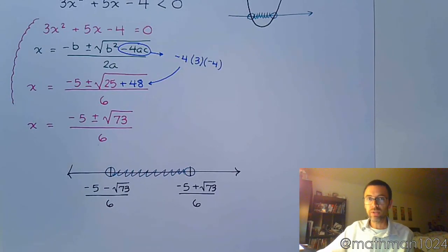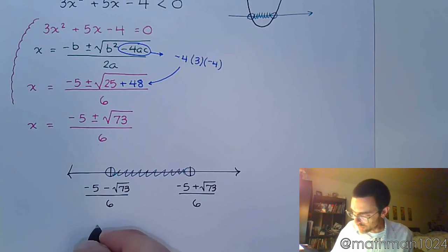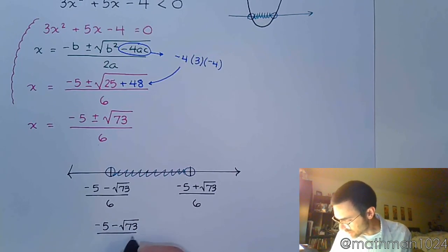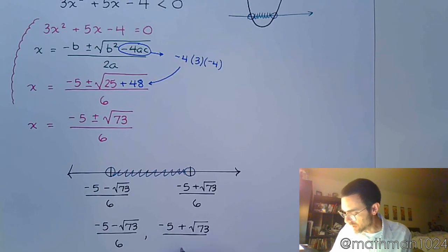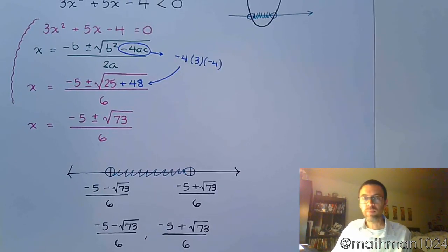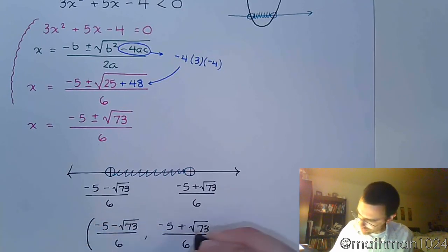So when we describe the solution set using interval notation, we're going from negative 5 minus the square root of 73 over 6, to negative 5 plus the square root of 73 all over 6. And since we are not including those endpoints, we use parentheses.